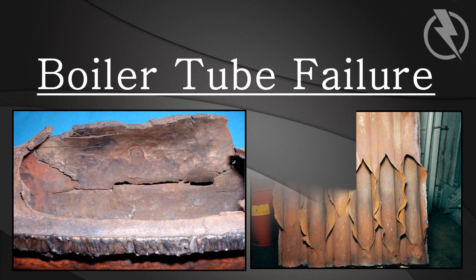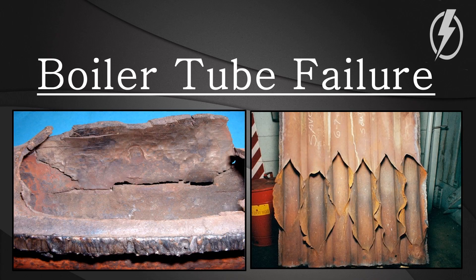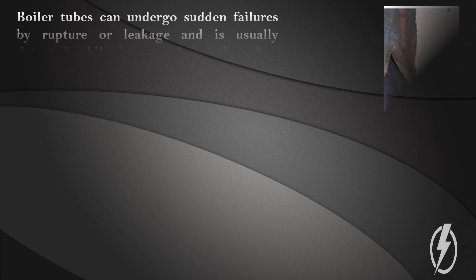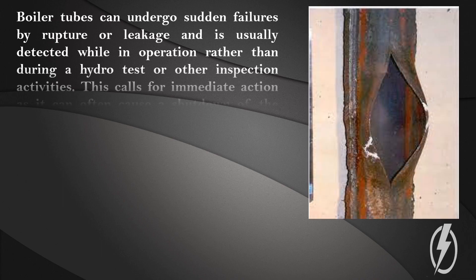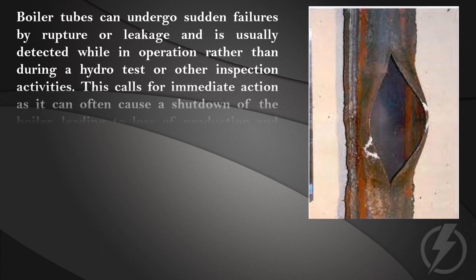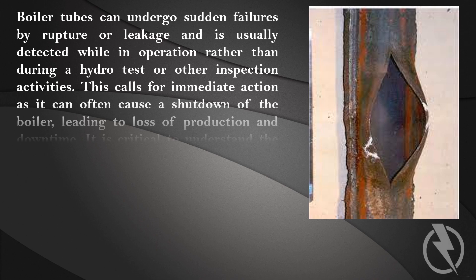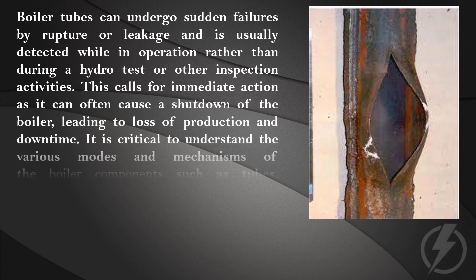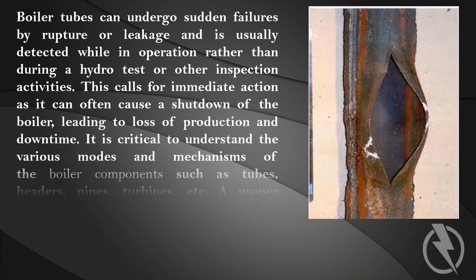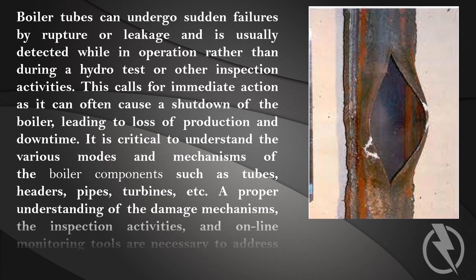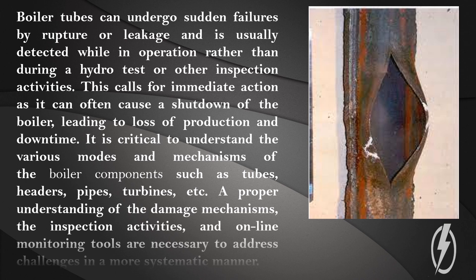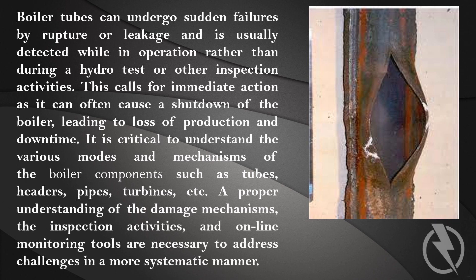Boiler tube failure. Boiler tubes can undergo sudden failures by rupture or leakage, and this is usually detected while in operation rather than during a hydro test or other inspection activities. This calls for immediate action as it can often cause a shutdown of the boiler, leading to loss of production and downtime.